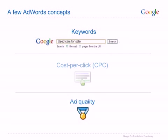AdWords uses this system so users can find what they're looking for quickly and simply, and the good news is if they do, they're more likely to be interested in what they find when they get to your site. I'll give you pointers for how to achieve high quality as we go through the campaign creation process.